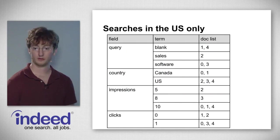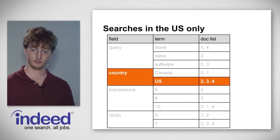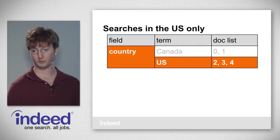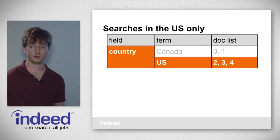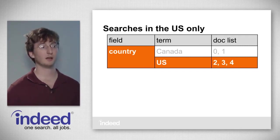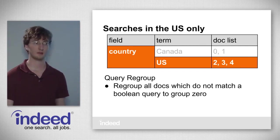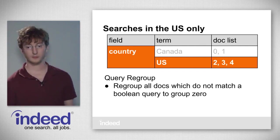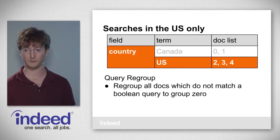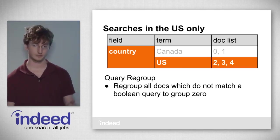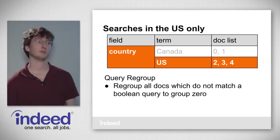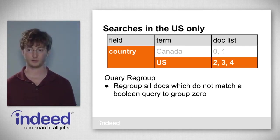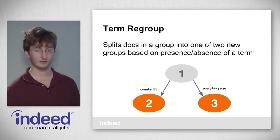To find out which searches were in the U.S., we use our inverted index. We go to the term 'U.S.' in the field 'country', and that gives us a doc list. The operation we perform in Emotep is what we call query regroup. A query regroup regroups all the docs which do not match a Boolean query to group 0. In this case, our query is: does this document contain the term country U.S.? Group 0 is the filtered-out group, so this filters all non-matching docs out and lets us count the remainder per day.